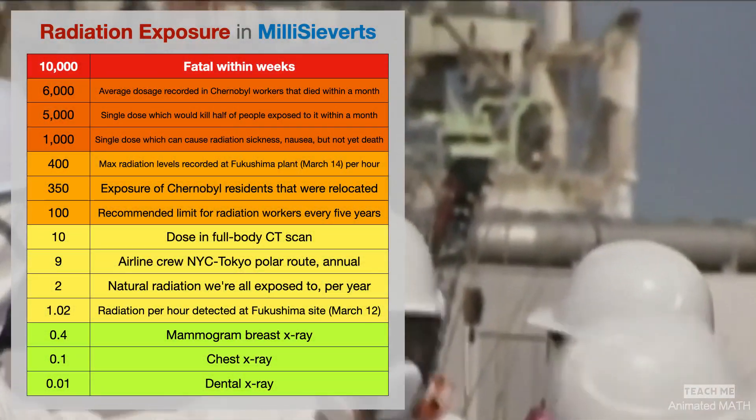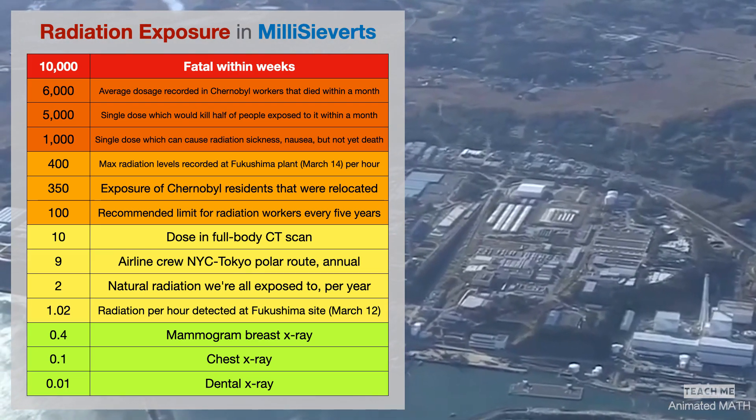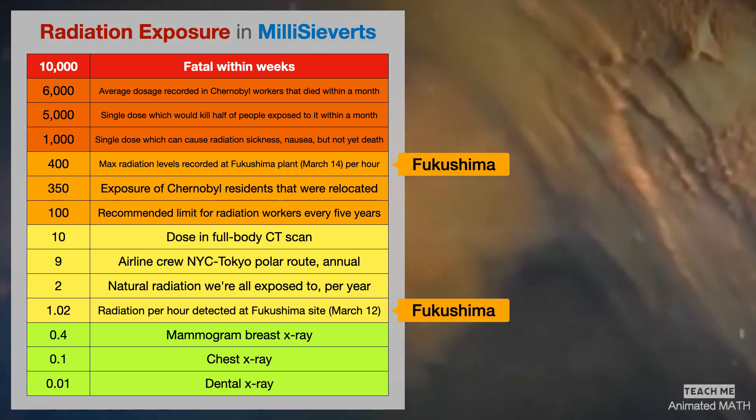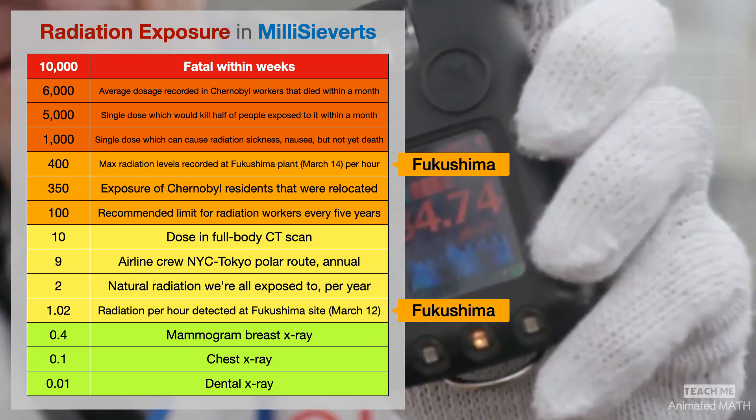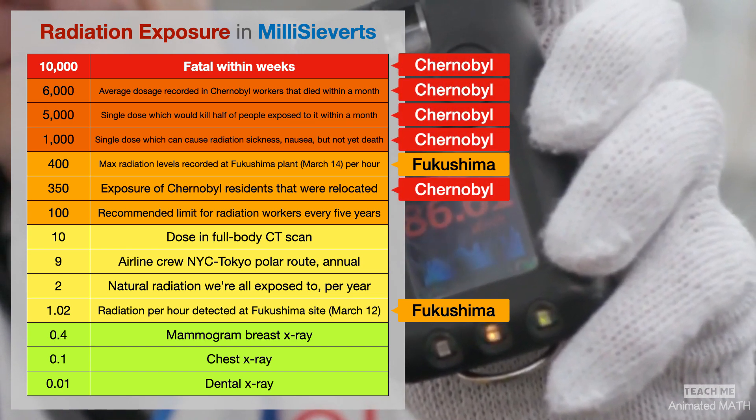Take a look at this table just to give you an idea of the health risks that radiation exposure can do. The maximum radiation levels recorded at the Fukushima plant was 400 mSv an hour. Even though the values were high and the disaster was scary, it still pales in comparison to the Chernobyl nuclear power plant accident.